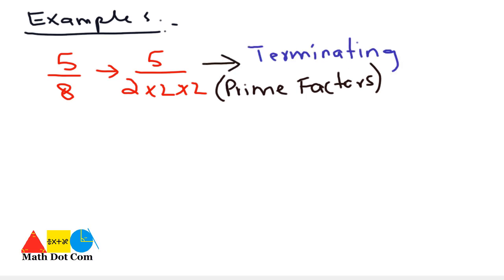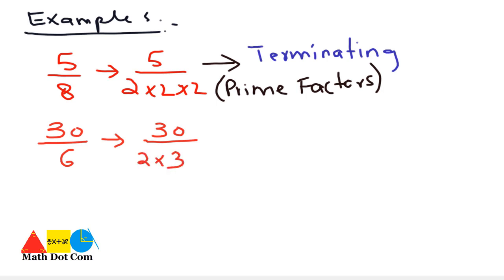One more example: 30 over 6. If we convert the denominator into factors, the factors of 6 are 2 into 3. These are the prime factors. Both 2 and 3 are prime factors, but we are not having 2 alone — there is also 3. When we have a prime factor other than 2 or 5, then it is non-terminating. So in this case, 30 over 6 is non-terminating.